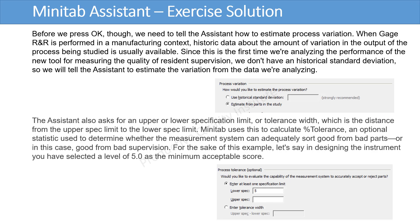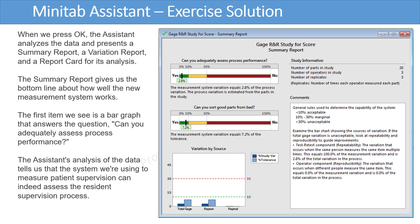Minitab uses this to calculate percent tolerance, an optional statistic used to determine whether the measurement system can adequately sort good from bad parts — or in this case, good from bad supervision. For this example, let's say in designing the instrument you have selected a level of 5 as a minimum acceptable score. When we press OK, the Assistant analyzes the data and presents a summary report, variation report, and the report card for its analysis.